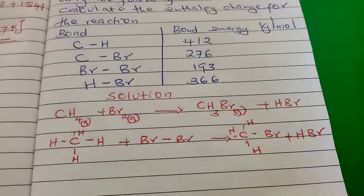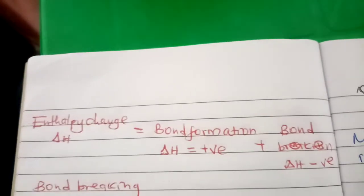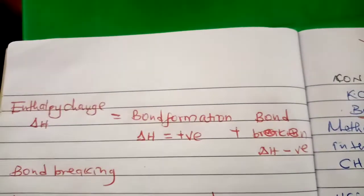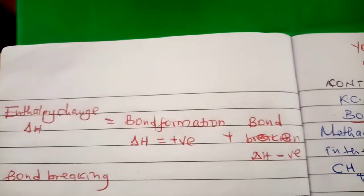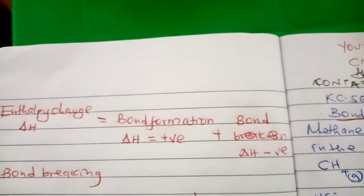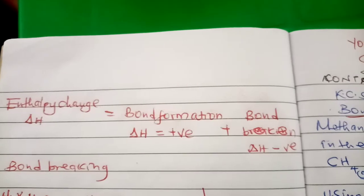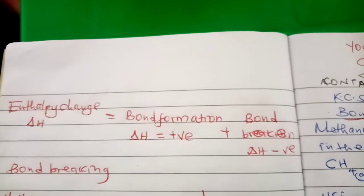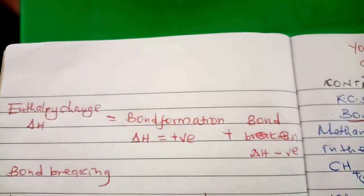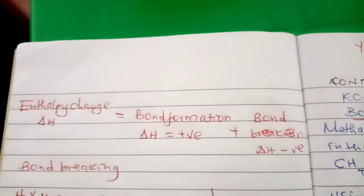You come and use the formula: enthalpy change equals bond formation plus bond breaking. Bond formation is an endothermic reaction, and bond breaking is an exothermic reaction. Using the table, you calculate the bonds broken and the bonds formed.